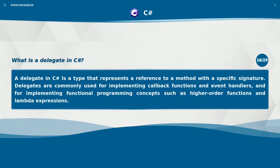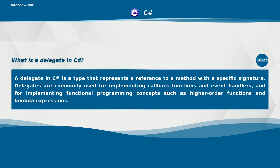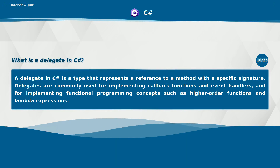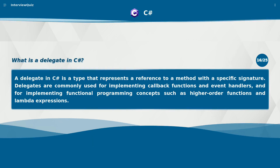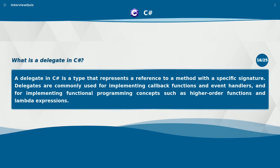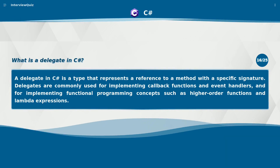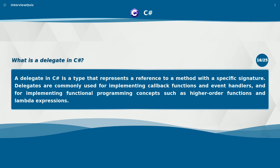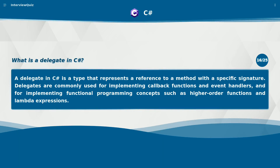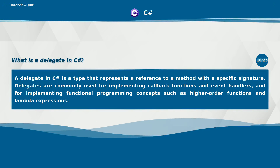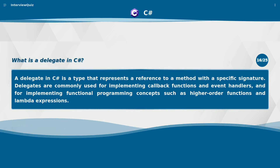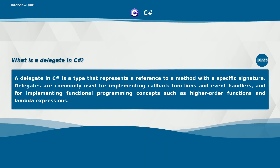What is a delegate in C#? A delegate in C# is a type that represents a reference to a method with a specific signature. Delegates are commonly used for implementing callback functions and event handlers, and for implementing functional programming concepts such as higher-order functions and lambda expressions.